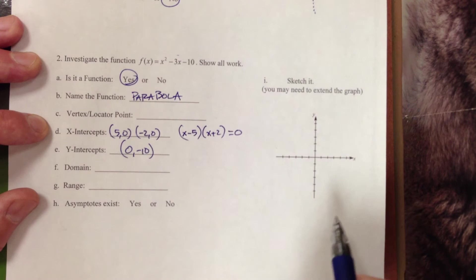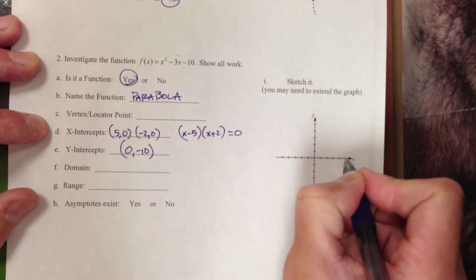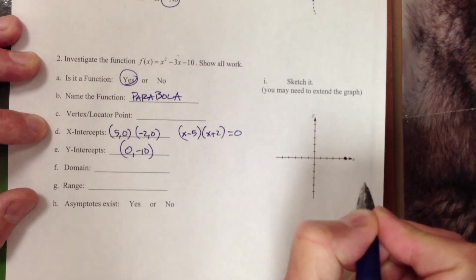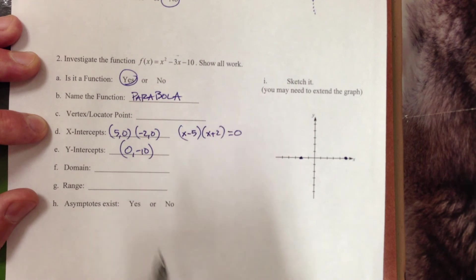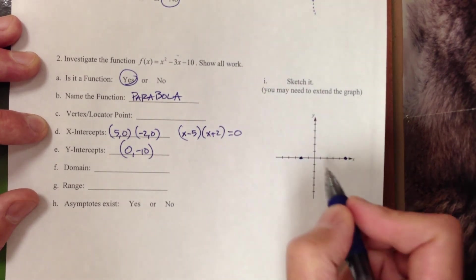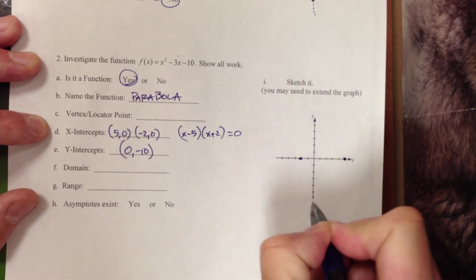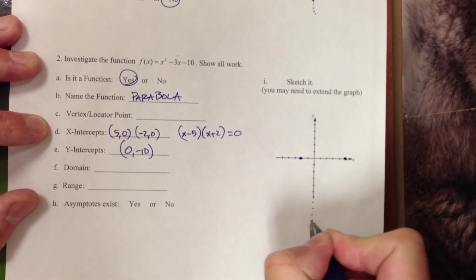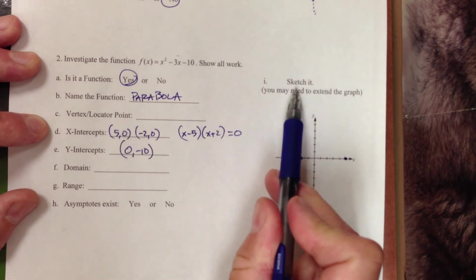So I can start to look at this graph, see how it's shaping up. Positive 1, 2, 3, 4, 5. Negative 2, 1, 2, 0. Y-intercept. It's not going to fit. 1, 2, 3, 4, 5, 6, 7, 8, 9, 10. Somewhere approximately there. It's going to give us a nice sketch.